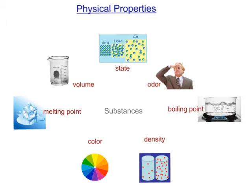Here are some physical properties of different substances. You'll remember from the last section we talked about the different states of matter — solid, liquid, gas — and those are definitely examples of physical properties, as well as odor, volume, and color. Boiling point is a physical property — the temperature at which a substance achieves a boil. Melting point is the temperature at which a solid will melt and change state into a liquid. Density is another physical property. This substance is less dense than this one — fewer atoms or molecules per volume in this cylinder than here.